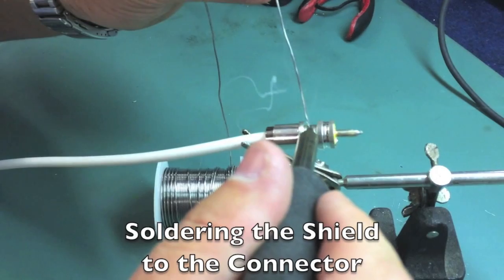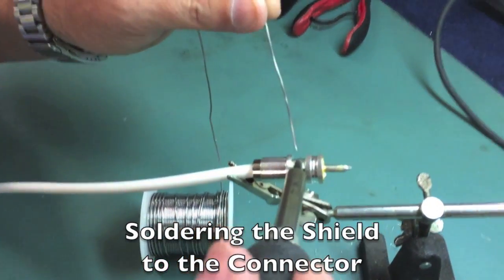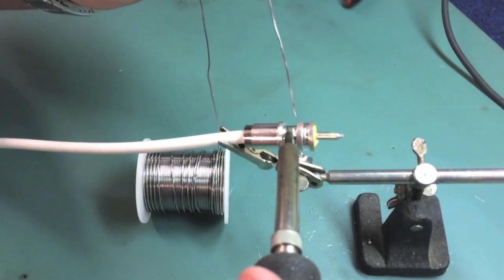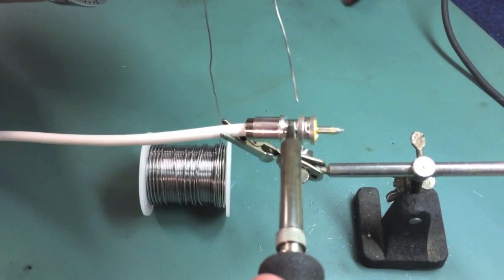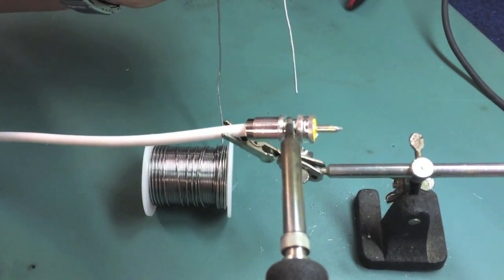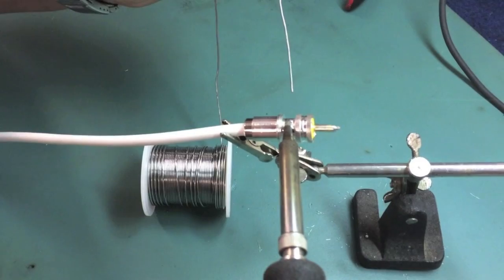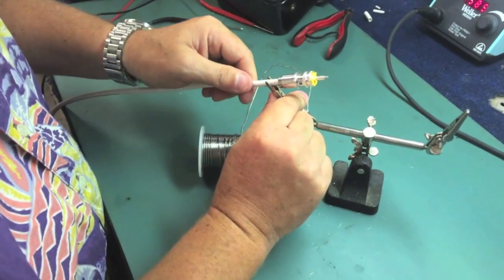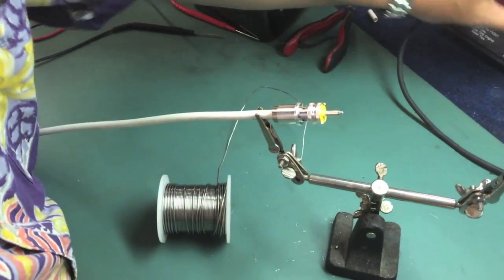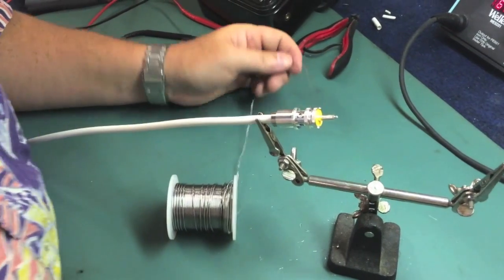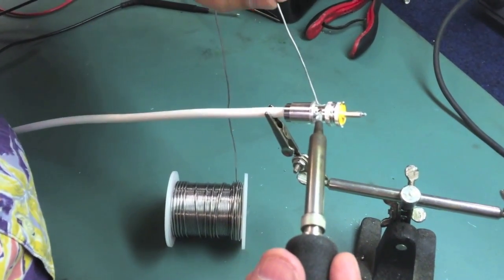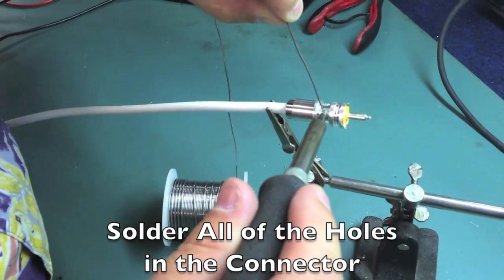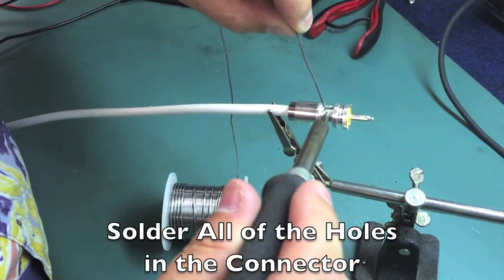What we're doing now is we're rolling solder into these holes so we can solder the shield to the ground side of the PL259. Now do you have to do all three of those holes in the connector or just one or two? It's always good to do all of the holes. There are four holes here. Although I suppose you could do just one, but I like to do all four.